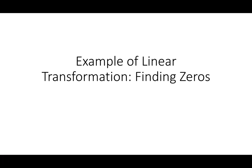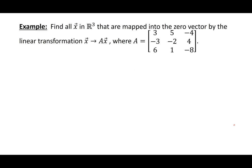Let's talk about an example of linear transformations and finding zeros of a transformation. For example, let's find all the x in R³ that are mapped to the zero vector by the linear transformation A times x, where we have the matrix A given here.